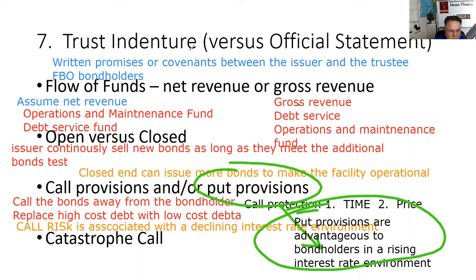Catastrophe call: the Municipal Securities Rulemaking Board — this is in the trust indenture — the catastrophe call is the only call provision that need not be disclosed to investors. It is found in the trust indenture, but it need not be disclosed.